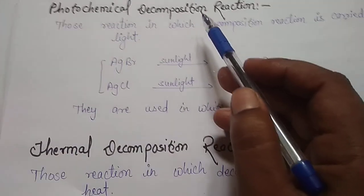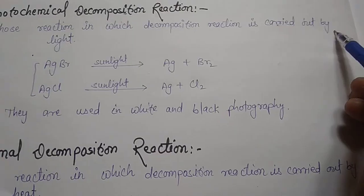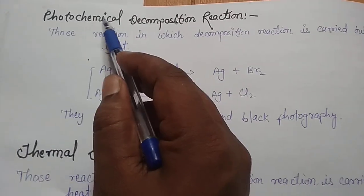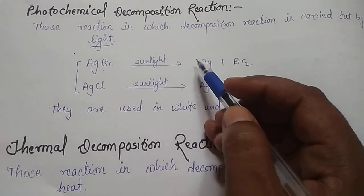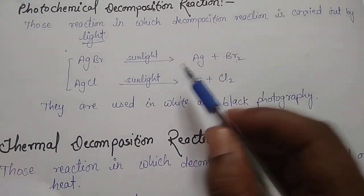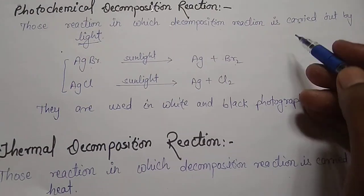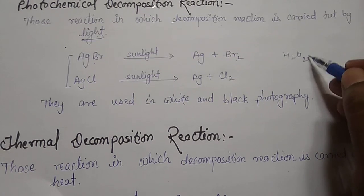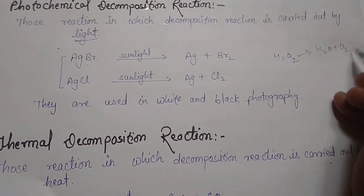Third is photochemical decomposition reaction. Photochemical means those reactions in which decomposition is carried out by light. If a substance decomposes with the help of light, that will be a photochemical decomposition reaction. For example, when silver bromide is exposed to sunlight, it gives silver plus bromine gas. Silver bromide is used in black and white photography. Similarly, hydrogen peroxide cannot be kept in transparent bottles because when exposed to sunlight, it decomposes and gives water plus oxygen.